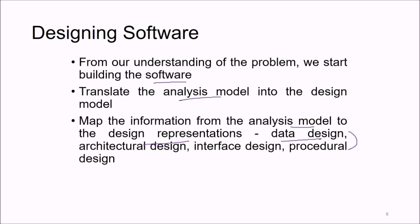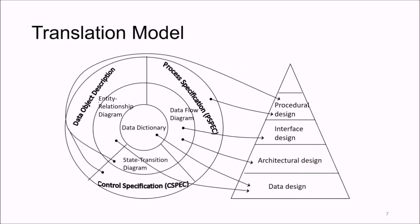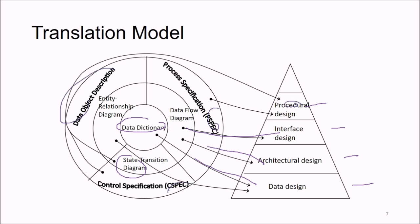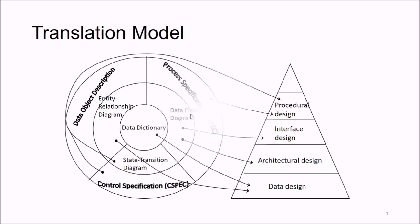The four design types — data design, architectural design, interface design, and procedural design — cumulatively form a complete design. Various aspects of the analysis model can be translated into these designs. For example, a DFD (data flow diagram) can be translated into interface design or architectural design. A data dictionary is translated into data design. A state transition diagram is translated into procedural design. Other elements like data object description, process specification, and control specification also map into this design model.